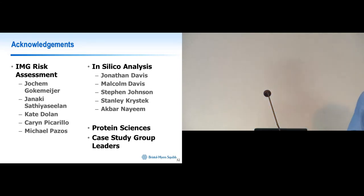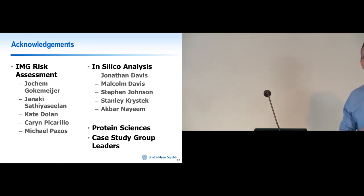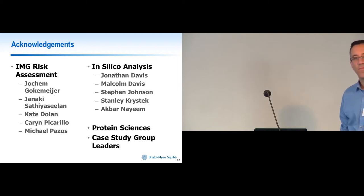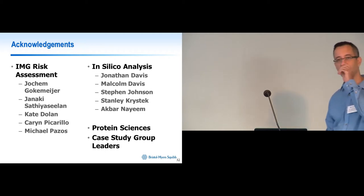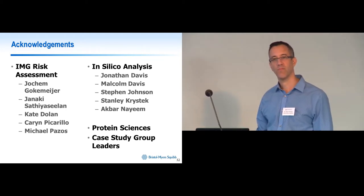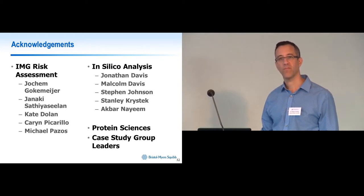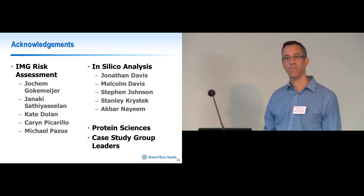Thank you very much Darren. [Question from audience member Govinda from BC Cancer Agency]: You showed that by making those single amino acid changes in the two case studies you can reduce immunogenicity down to levels of the negative control, which is still 10% of donors having some response. Is that the acceptable threshold? How is 10% set as what's an okay amount of immunogenicity?